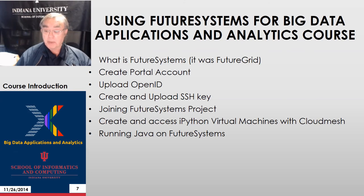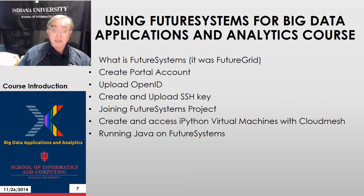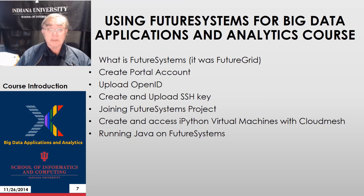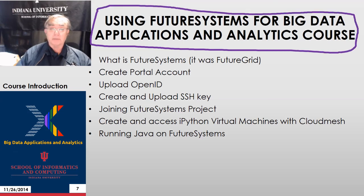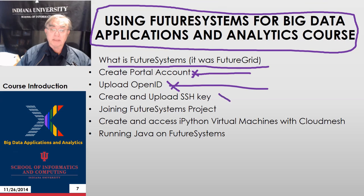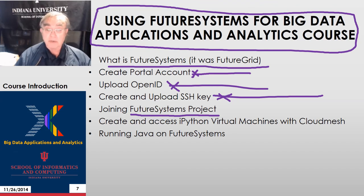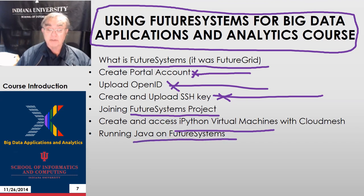Then we have another side MOOC — remember that side MOOCs tend to be off the mainstream of the logical structure. This is a side MOOC on the back-end cloud, which is not necessary for you to use. You can do your work on your own computer, whether it be Python or Java. So we describe what Future Systems is, show you how to create an account through the portal, how to upload your OpenID, and upload an SSH key for security. The class will have a project associated with it — you join that project and you'll then be given rights to run on Future Systems, with discussion of using Python and Java in that environment.